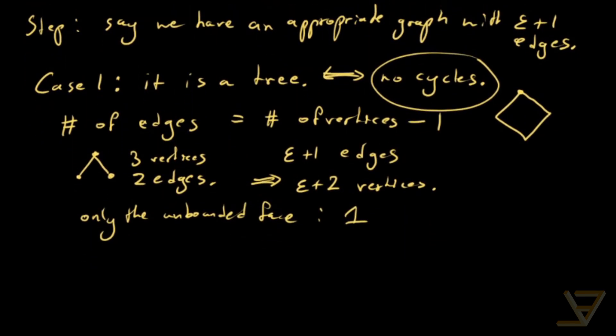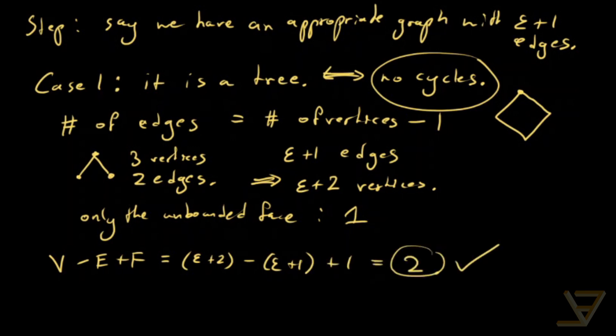So we can do the computation very explicitly in this case. We get that V minus E plus F is equal to epsilon plus two minus epsilon plus one plus one and that's equal to two. So it does hold in the tree case.